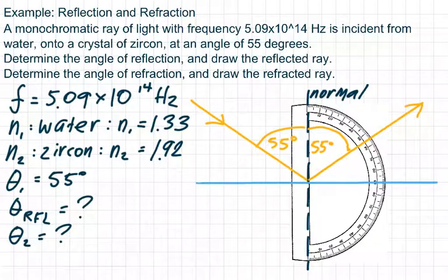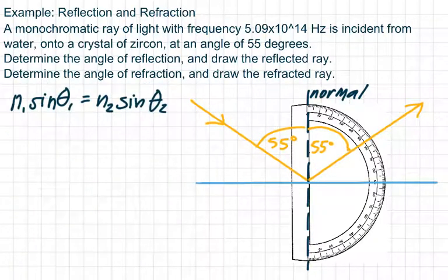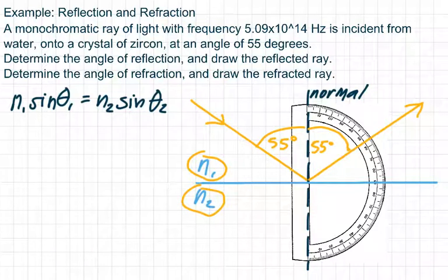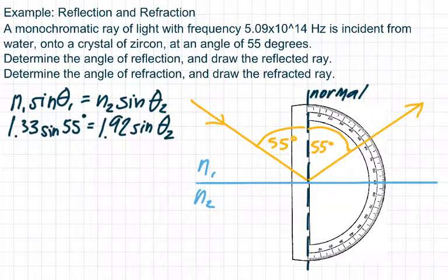Now to draw the refracted ray, I actually have to calculate the angle of refraction. So the formula that I'm interested in is Snell's Law: n1 sine theta1 equals n2 sine theta2, where n1 is the index of the first medium and n2 is the index of the second medium. So this would be coming in from water, n1, and then it would be entering into zircon, n2. So water has an index of 1.33, and zircon has an index of 1.92. Remember, no units for index. Then theta1 is 55 degrees, and I'm solving for theta2.